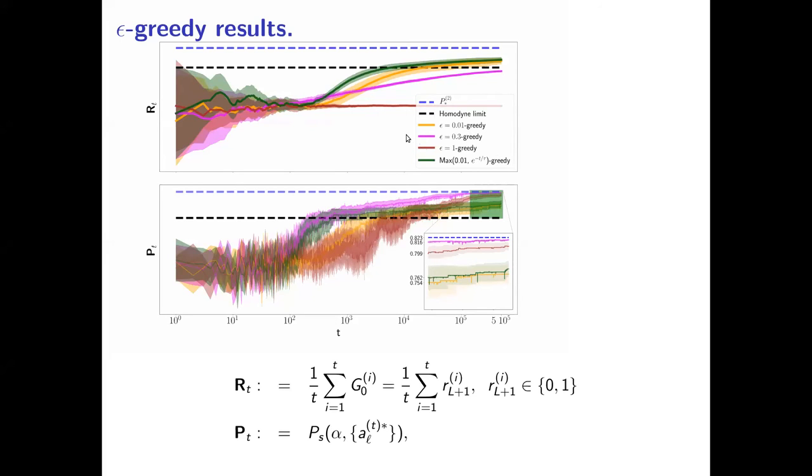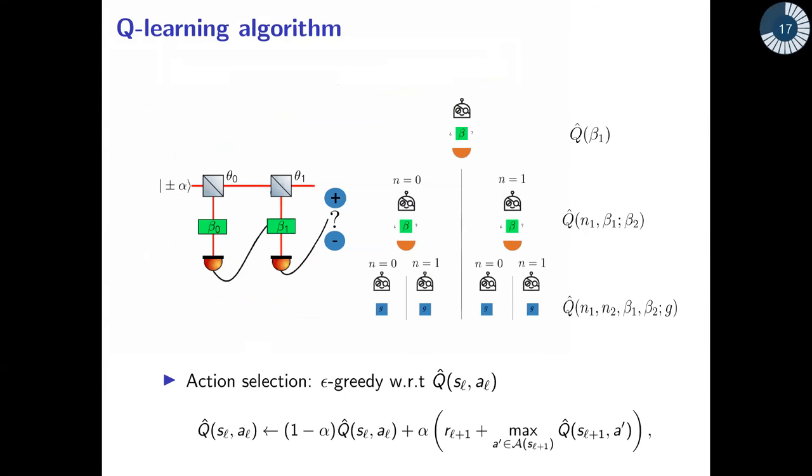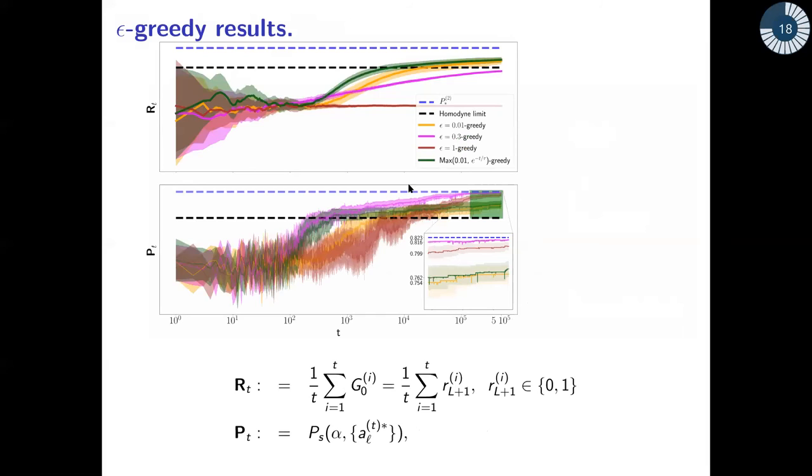Next, once the signal is displaced and the measurement is done, according to the outcome it decides the next displacement, and for this case of two layers, then it measures again, and then it decides according to the history which guess to make. What we did is to plug this formalism or algorithm or formulation into a simulation of this receiver and we cast the evolution of some figure of merits as experiments evolve.